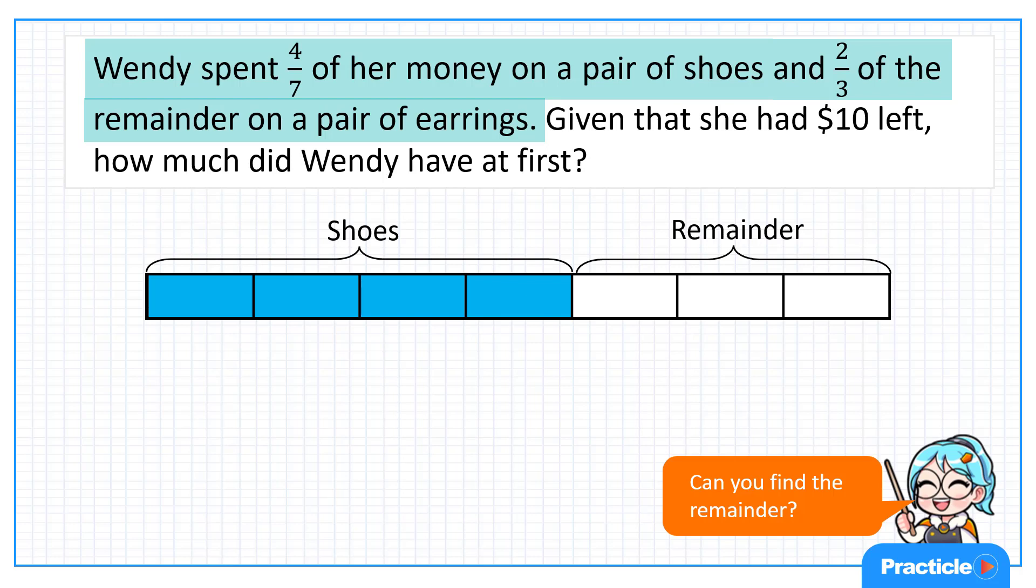Do we know what fraction of the remainder Wendy spent on the pair of earrings? We are given that she spent two-thirds of the remainder on the pair of earrings. Now what can we tell about this fraction two-thirds? This fraction tells us that Wendy spent two parts out of a total of three parts of the remainder. Can you see that?